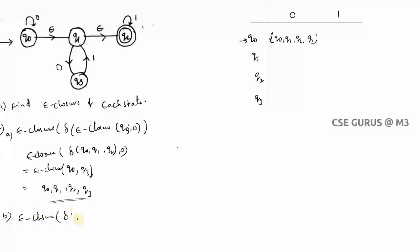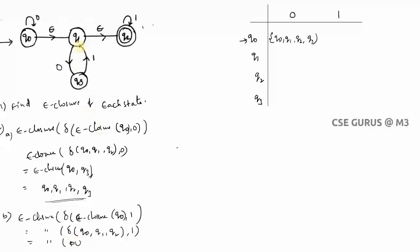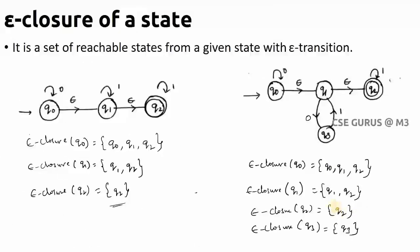For Q0 on input 1: e-closure(Q0) = {Q0, Q1, Q2}. Now δ(Q0, 1) = nothing (∅), δ(Q1, 1) = nothing (∅), δ(Q2, 1) = Q2. So we get {Q2}. Then e-closure(Q2) = {Q2}. Therefore the result for Q0 on input 1 is {Q2}.